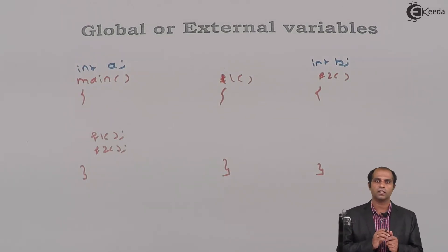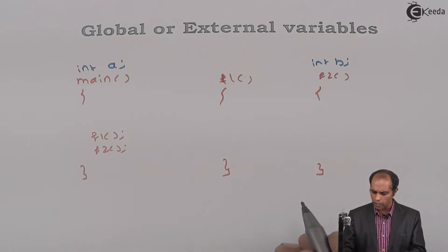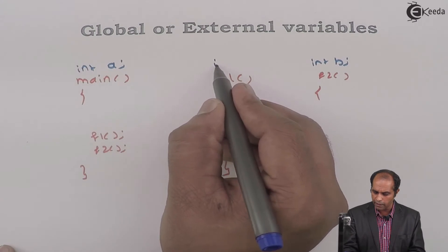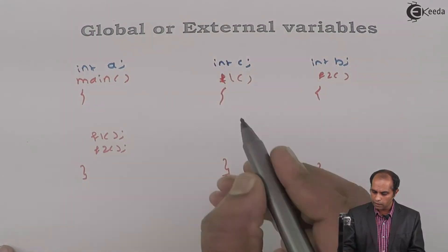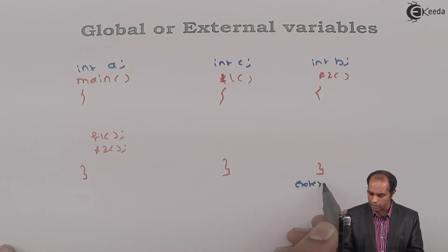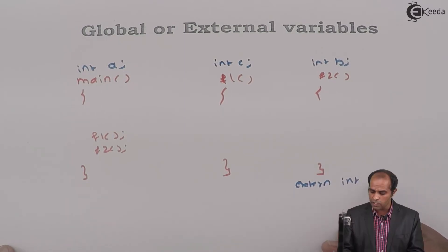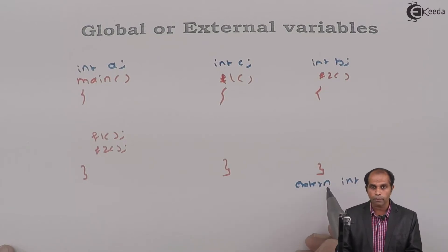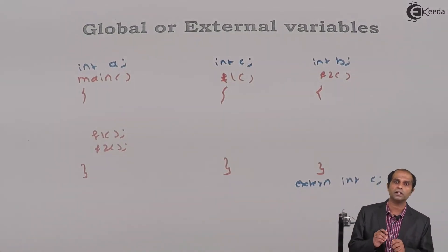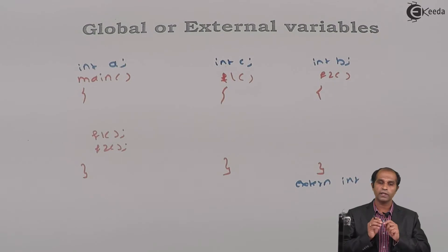Now let's understand the keyword extern. You will not find this keyword used in a single-file program. Suppose int c is declared globally and is used in f1 as well as f2. If I put extern int c, it means this c is of type integer, and extern assures that this declaration has occurred at some place. All variables declared as global have an initial value of zero.